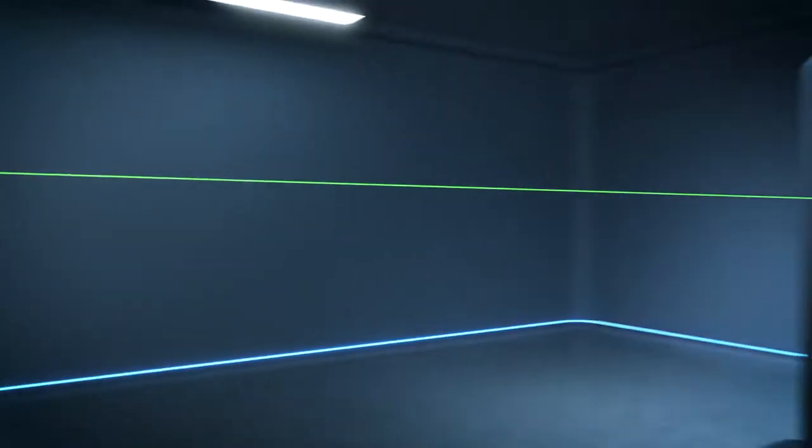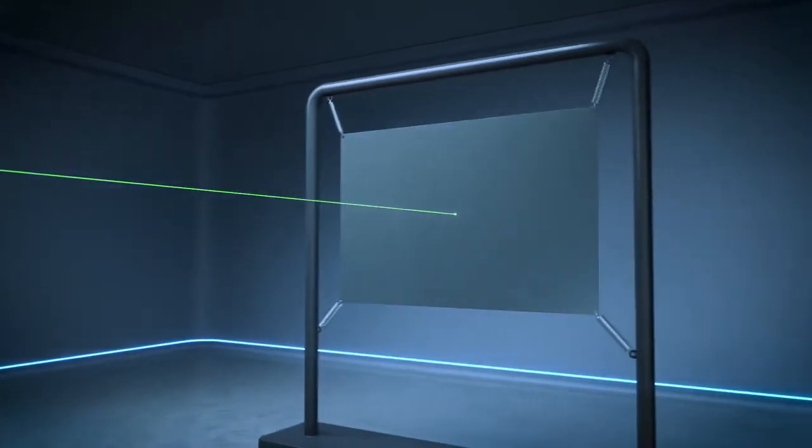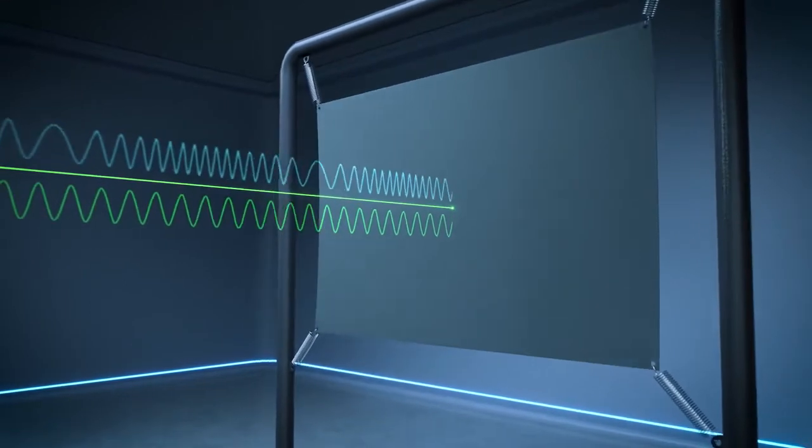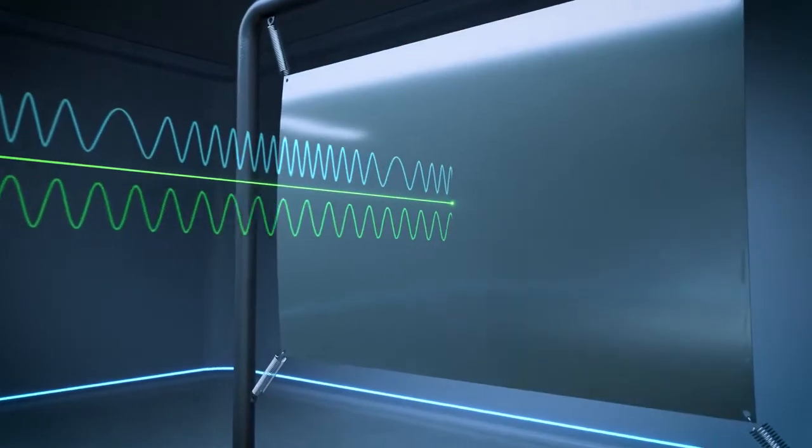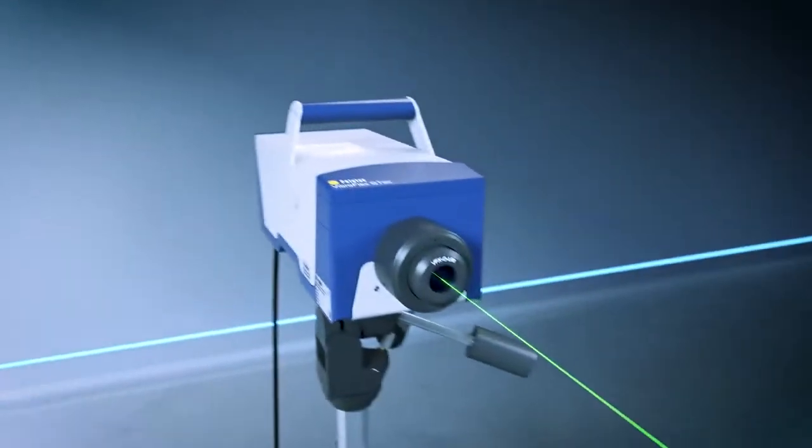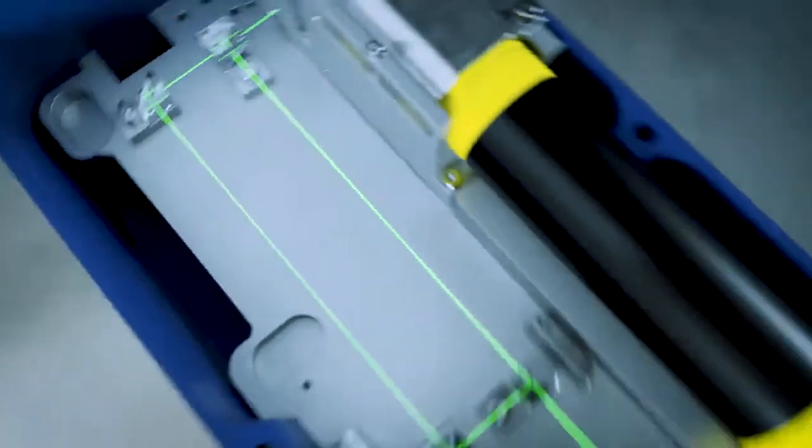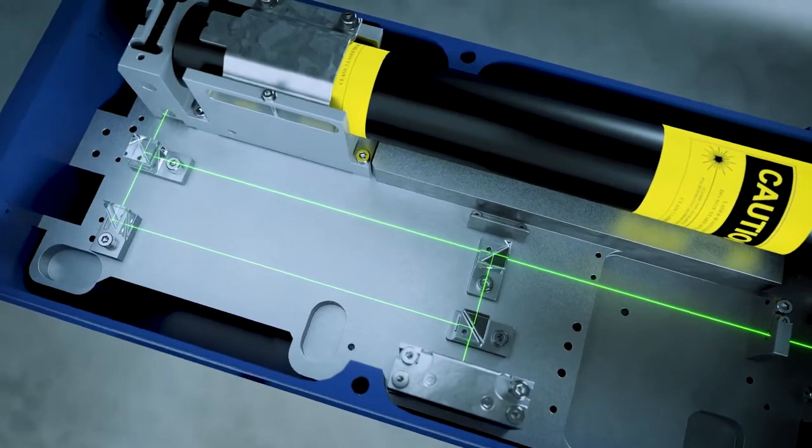Laser vibrometry uses the Doppler effect to measure vibrations. If light is scattered from a moving object, its frequency is changed slightly. Within a Polytech vibrometer, a high precision interferometer detects the minute frequency shifts of the back scattered laser light.